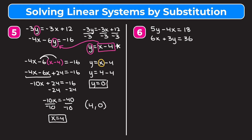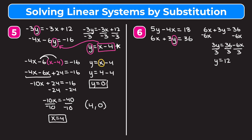For the last example we have 5y minus 4x equals 18 and 6x plus 3y equals 36. It's easiest to isolate y in the second equation because 6 and 36 are both divisible by 3. Subtracting 6x from both sides gives 3y equals 36 minus 6x, then dividing by 3 gives y equals 12 minus 2x.